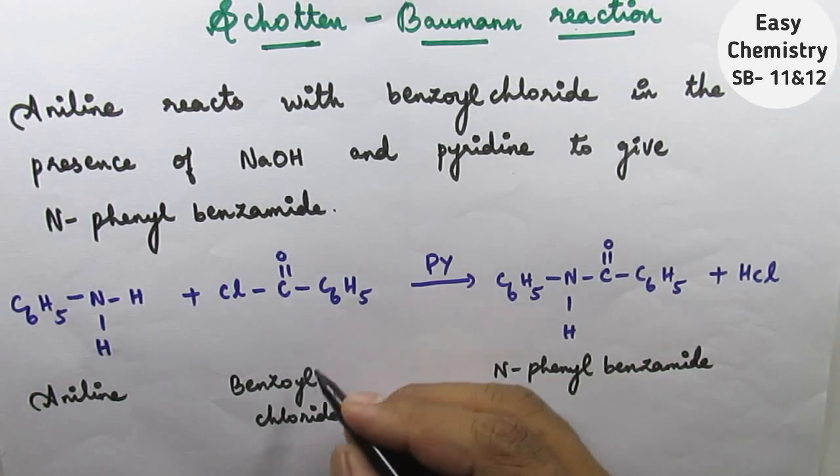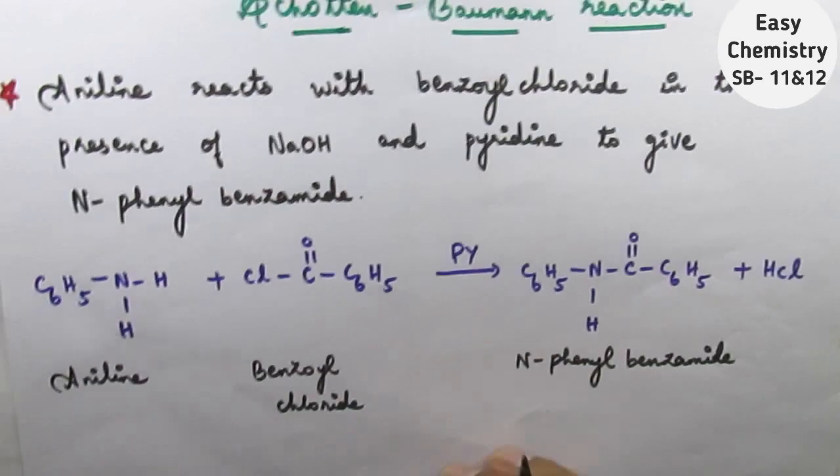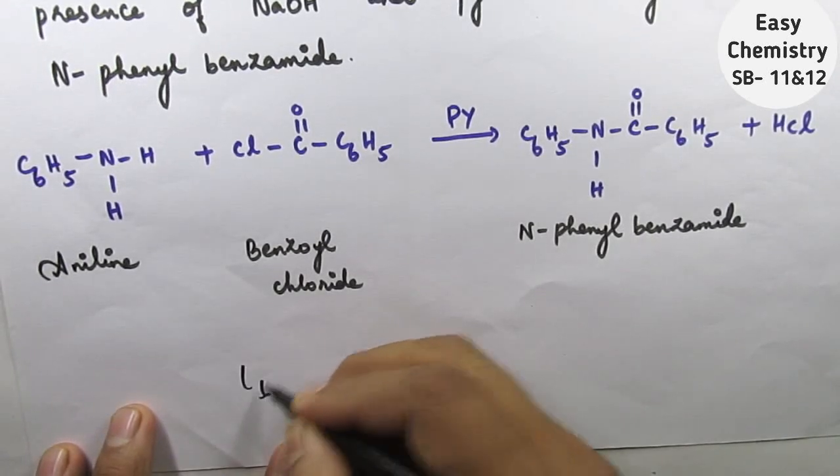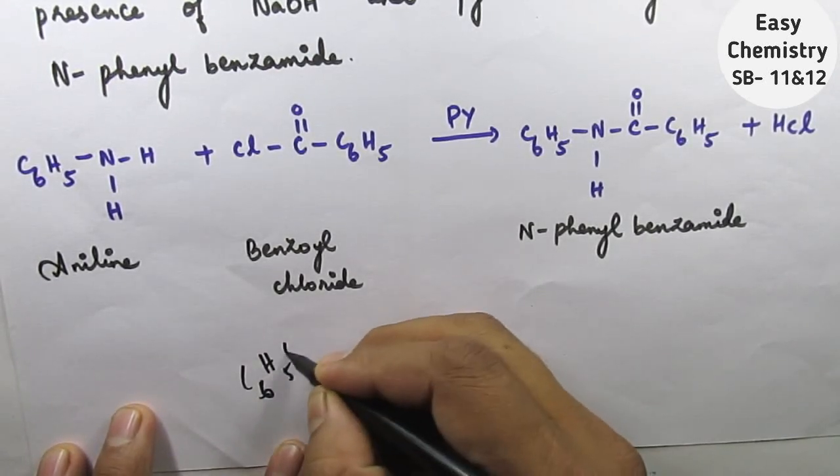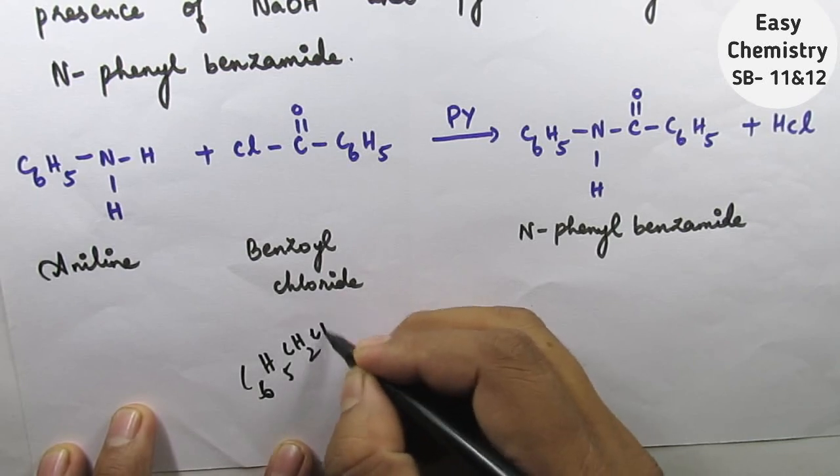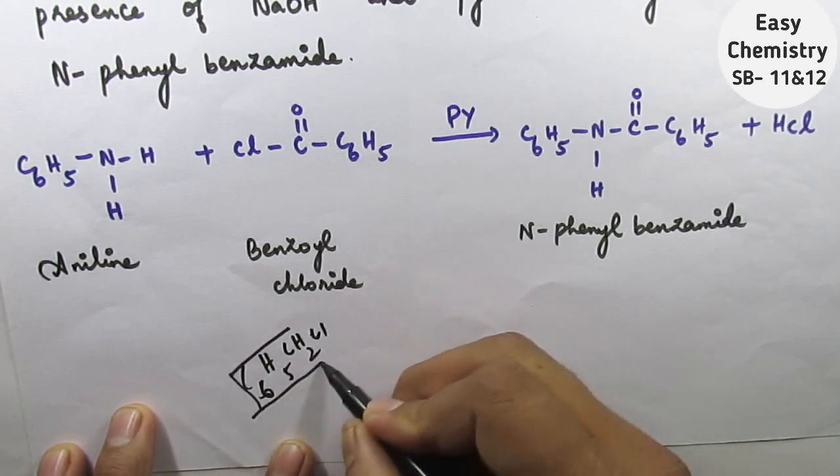Benzoyl, what you should say. C6H5, COH2Cl. It is benzoyl chloride.